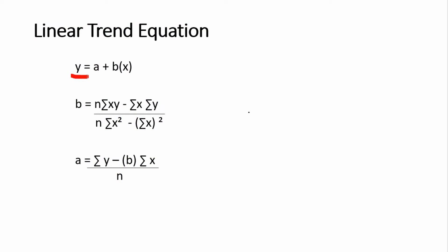The linear trend equation is y = a + b times x. However, before you can use the equation, you have to solve for b using this equation and then solve for a using this equation.